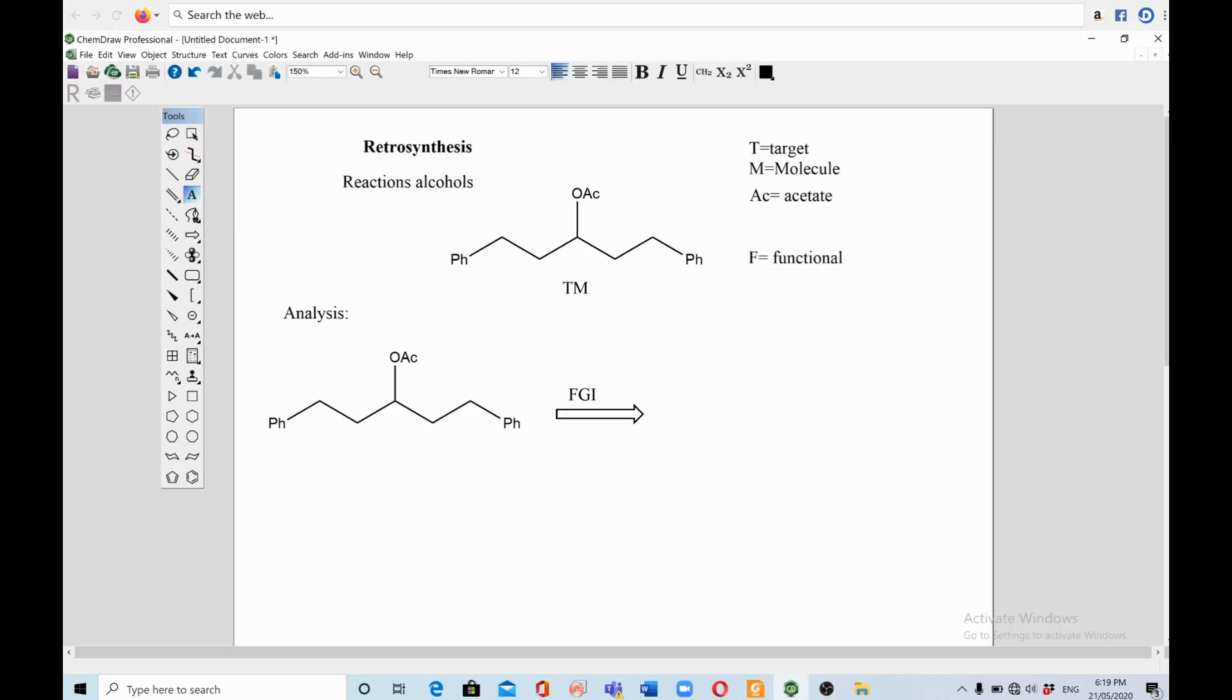I'll tell you now. Functional group interconversion, FGI. So what we do here is we convert the functional group. This is FGI. Don't forget to write what functional group you are converting. We are converting the ester group into an alcohol group.